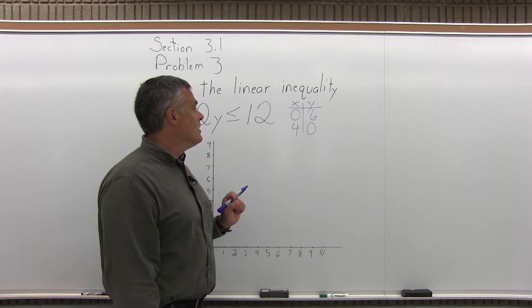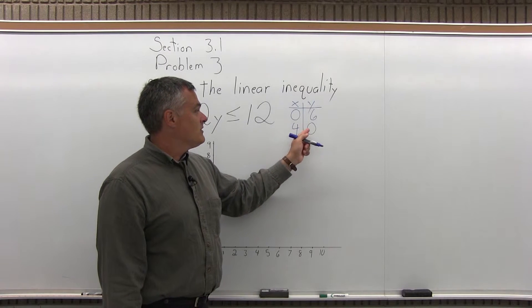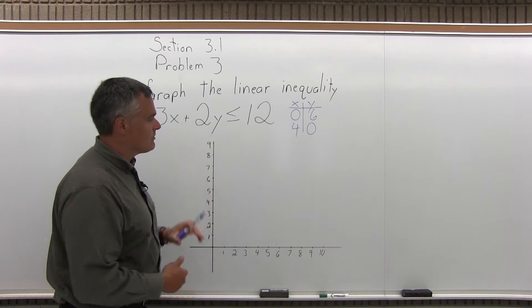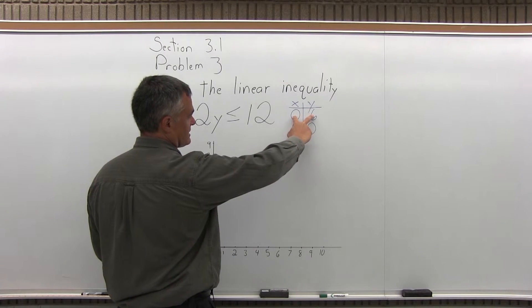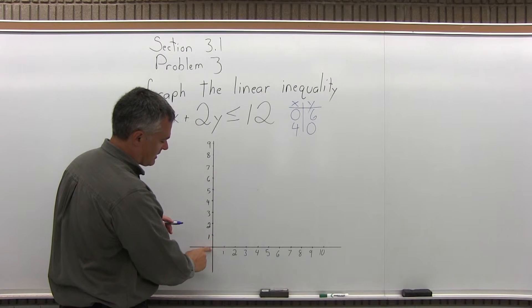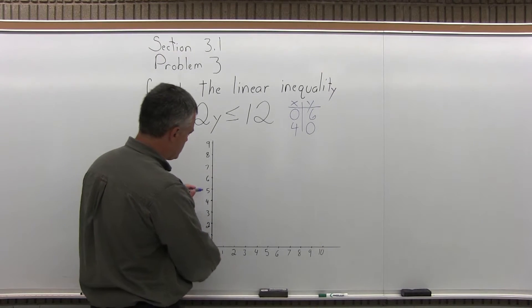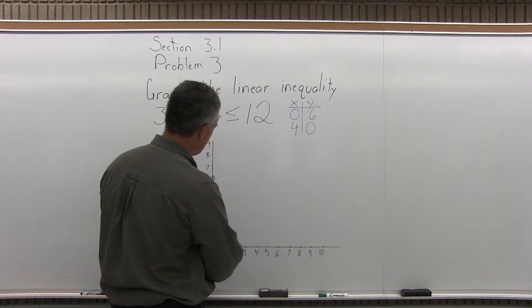Step 2, plot those 2 points that we found in step 1 on a graph. And I happen to have a graph set up, ready to go. So the first of the 2 points is 0, 6. x is 0, y is 6. So to graph that, I start from the origin, go over 0 and up 6. And here's one of the points right there.